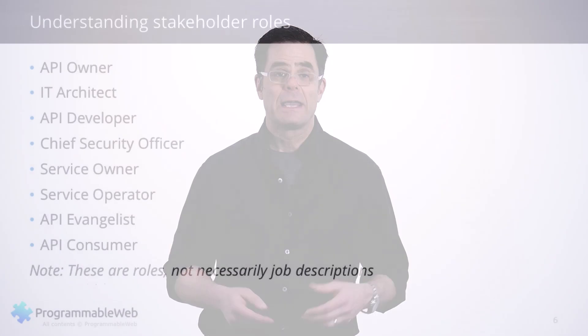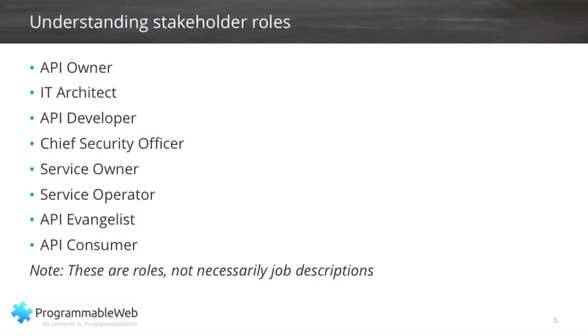Speaking of the target audience, you have the API consumers — the developers themselves, the guys and gals that write the applications. When you're launching an API, one of the most important things to do is get that developer involved early on, because it's sort of like a test market of the API with those developers. You want them to feel as though they're a part of the process, because then they have a little bit of ownership of that API, making them more likely to embrace it at launch. These are roles, not necessarily job descriptions. In most organizations, some people might take on more than one of these roles; in larger organizations, you might have a one-to-one relationship.